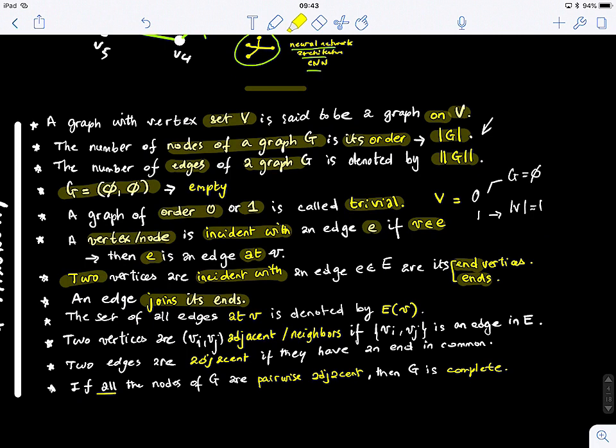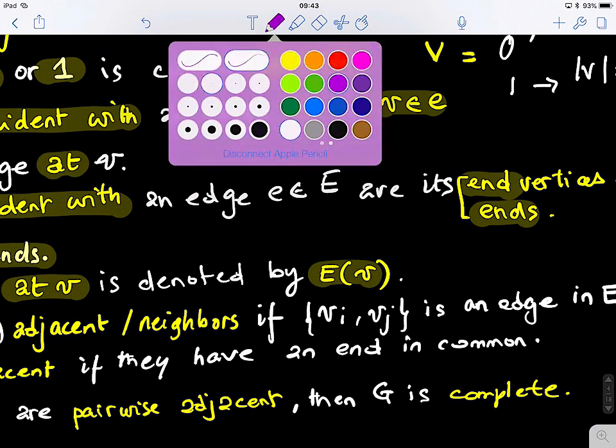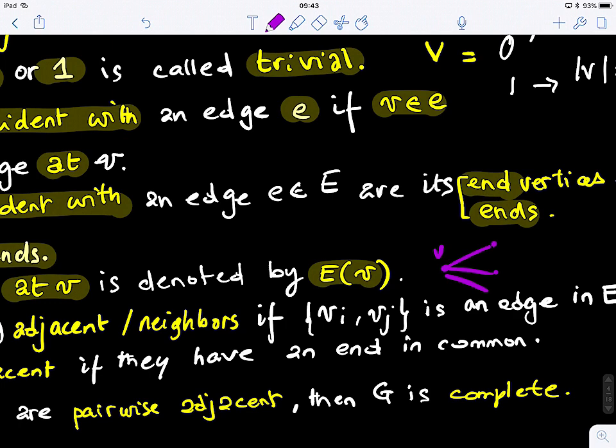Two vertices are incident with an edge if they are its end vertices, or we call them also its end nodes, or also its ends. An edge joins its ends, it connects both its end nodes. The set of all edges at V is denoted by E of V. This is the set of all edges centered at a node V. If we have a node V here connected to these other nodes, these edges are E of V.